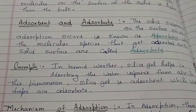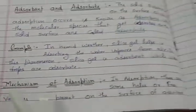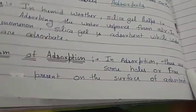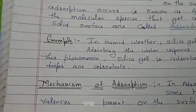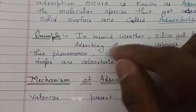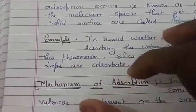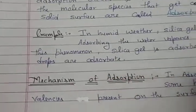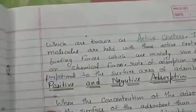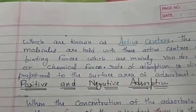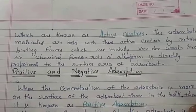Now let's discuss the mechanism of adsorption — how adsorption actually occurs. In adsorption, there are some holes or free valences present on the surface of the adsorbent. We can say there are some active sites where the adsorbent has a tendency to adsorb. These holes or active sites are known as active centers. The adsorbate molecules are held at these active centers by certain binding forces.